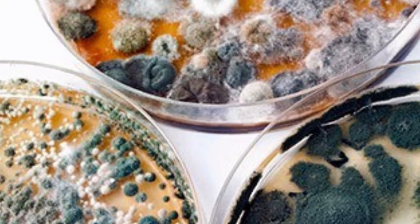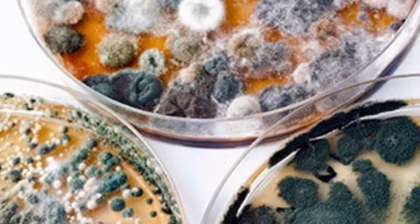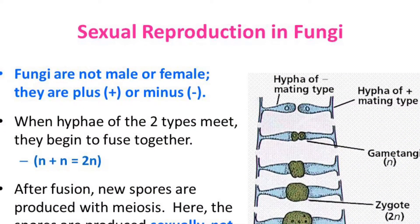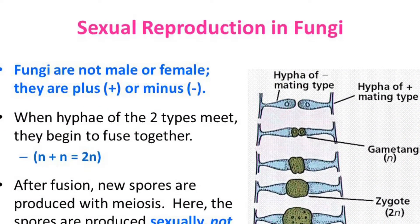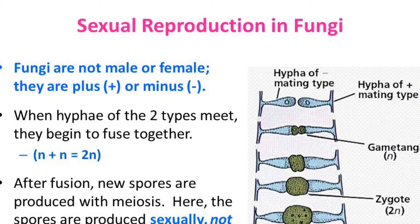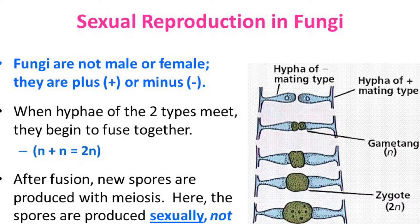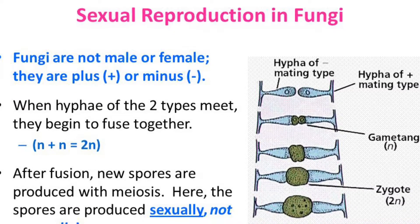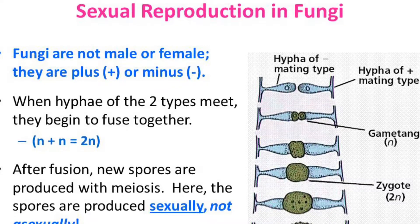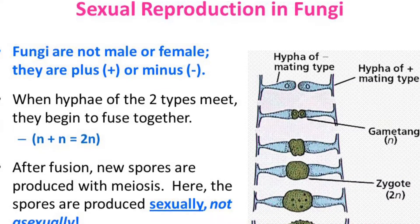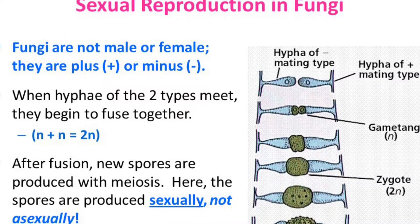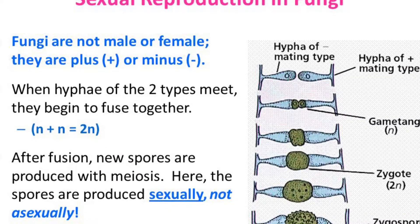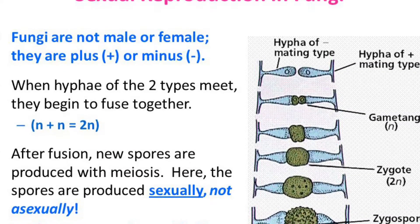However, fungi are really clever because they can reproduce sexually as well as asexually. So why would a fungus want to reproduce sexually? Well, if conditions are bad, by reproducing sexually there is a chance of variation. The variation in the offspring may suit the new environment better, and therefore natural selection — survival of the species.